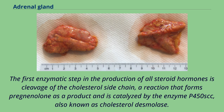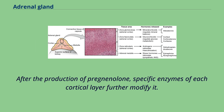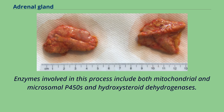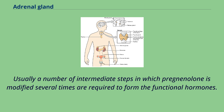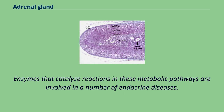The first enzymatic step in the production of all steroid hormones is cleavage of the cholesterol side chain, a reaction that forms pregnenolone as a product and is catalyzed by the enzyme P450-SCC, also known as cholesterol desmolase. After the production of pregnenolone, specific enzymes of each cortical layer further modify it. Enzymes involved in this process include both mitochondrial and microsomal P450s and hydroxysteroid dehydrogenases. Usually a number of intermediate steps in which pregnenolone is modified several times are required to form the functional hormones.